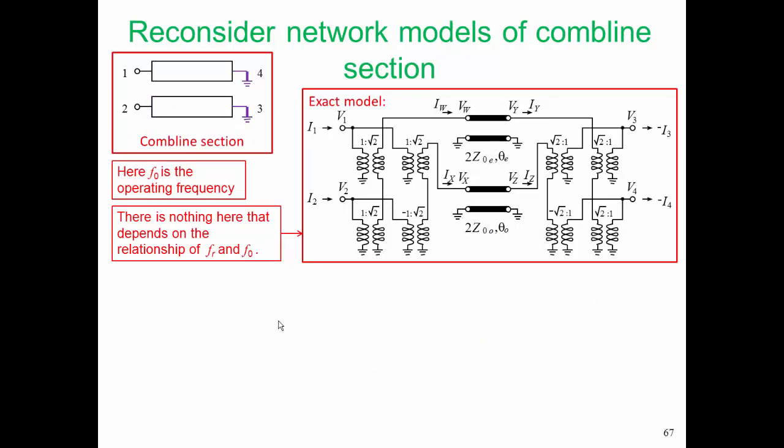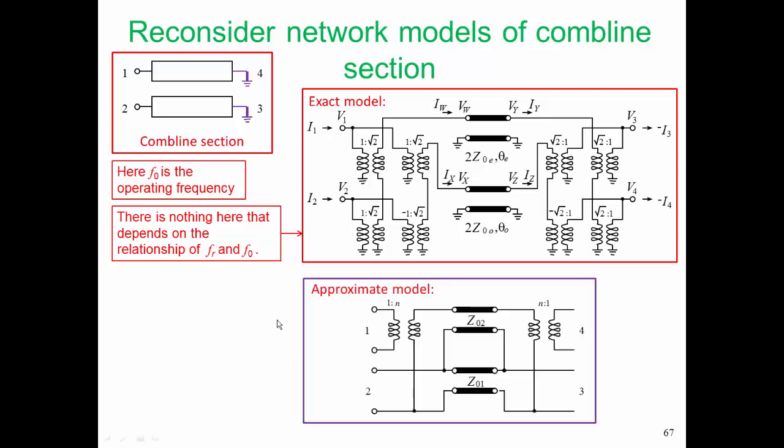So again, this is exactly the same model that we just talked about. This is the exact model. However, we used an approximate model in developing that simple form of model for a combline section. The circuit shown at the bottom here is the approximate model for a pair of coupled lines—not just for a combline section. Now this approximate model helps us in developing our prototype circuit. The exact model is just a little bit too complex. No one's been able to figure out how to come up with a prototype synthesis procedure which leads to the form of that exact model. But for the approximate model, we have a prototype synthesis process which leads to a circuit which can directly be translated into PCL filter form.